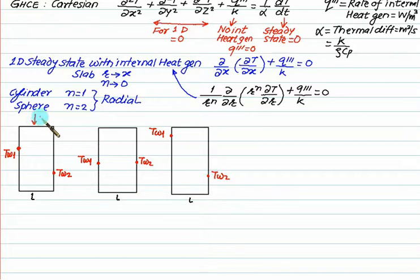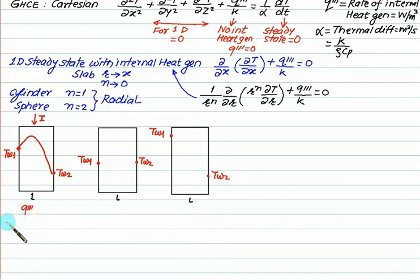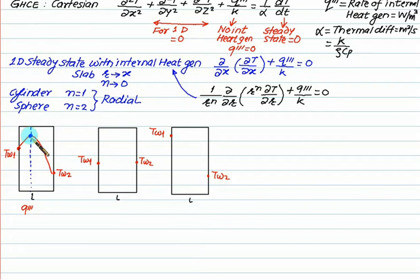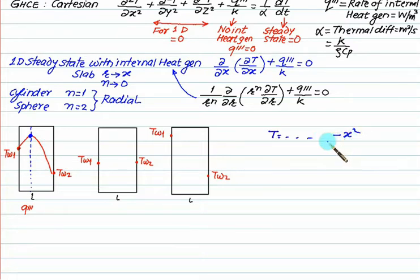With internal heat generation, the maximum temperature will occur inside the plate. If the heat source is not at the center, the maximum temperature will be offset from the center. The temperature profile is a parabola — whenever there is a minus x² term, the parabola is downward. The location of maximum temperature is found using dT/dx = 0.